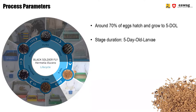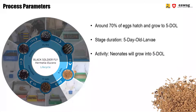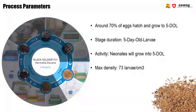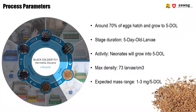The larvae stay about five days in the substrate, which makes them five-day-old larvae. The boosted growth will start just after they have emerged as neonates and stop when they have reached the five-day-old age, at the time when we are counting them. Just before we count the five-day-old larvae, we will have about 73 larvae per cubic centimeter in the residue, and they will weigh between one and three milligrams per five-day-old larva.